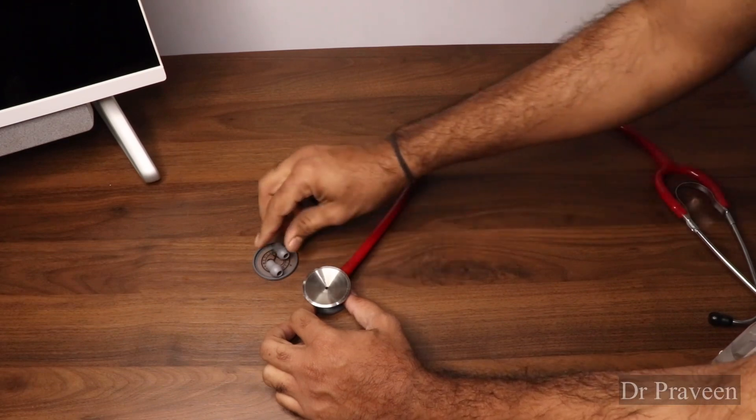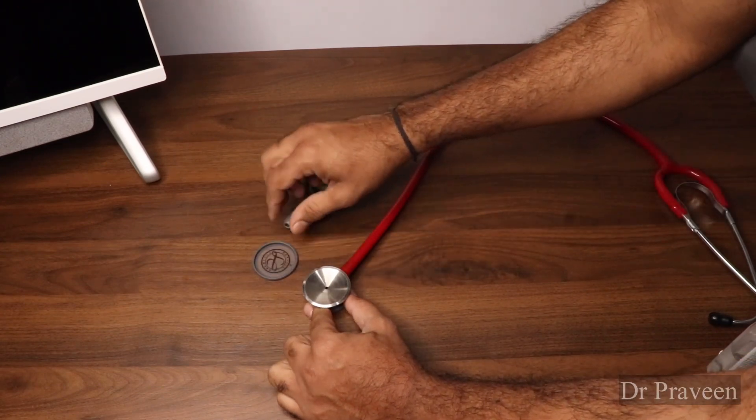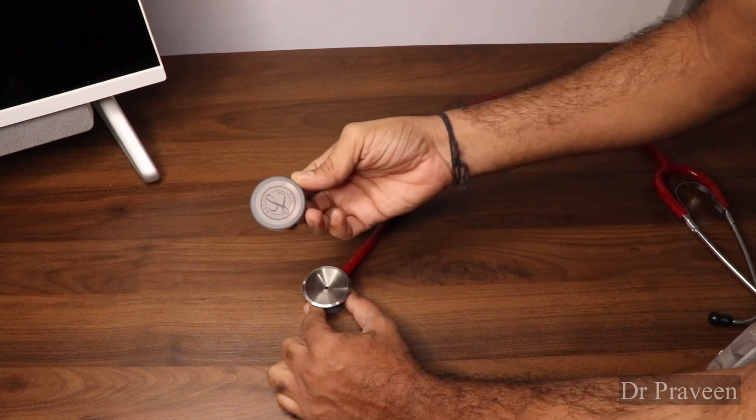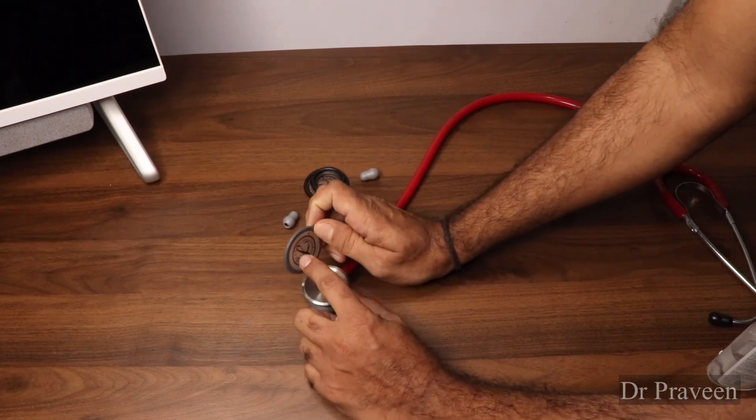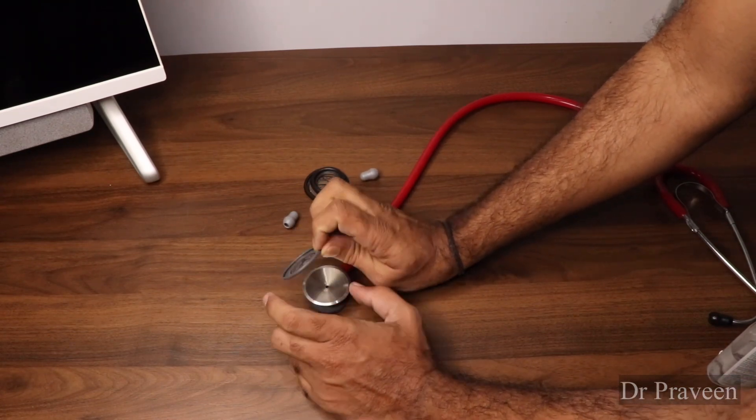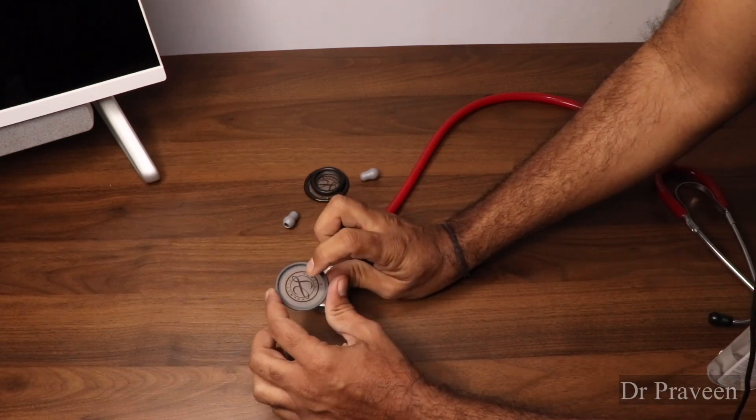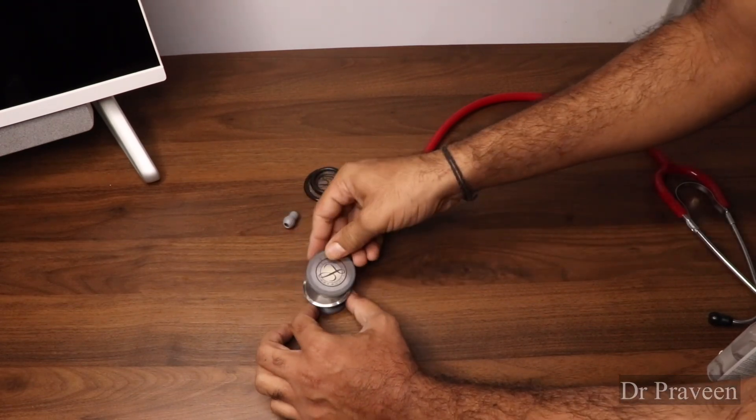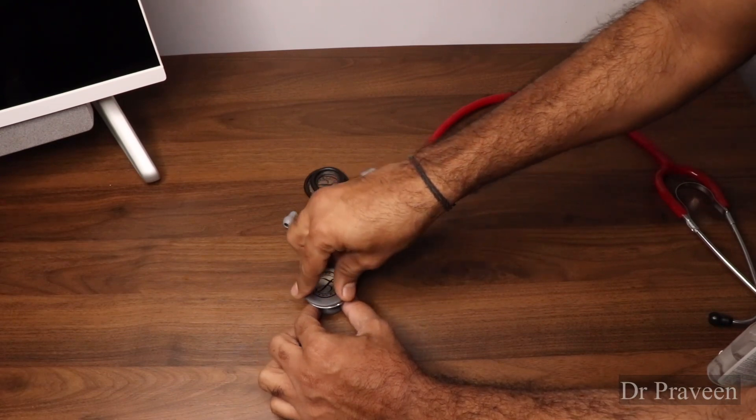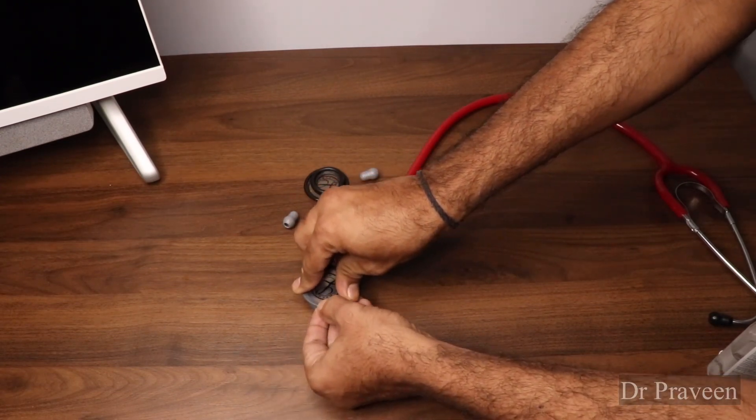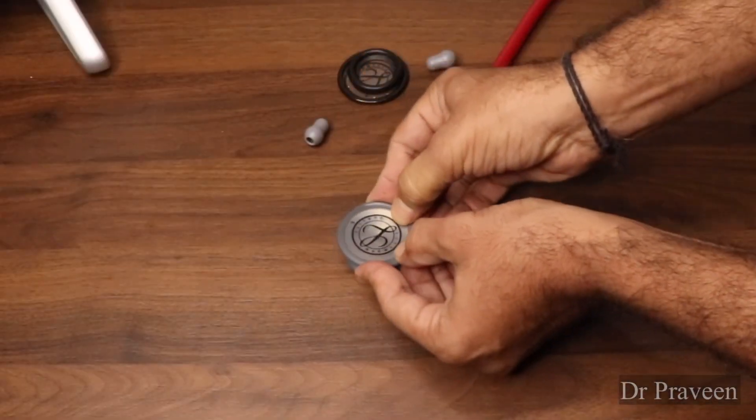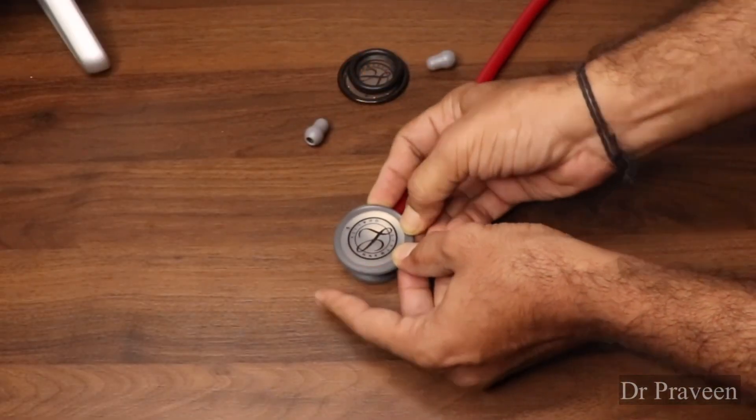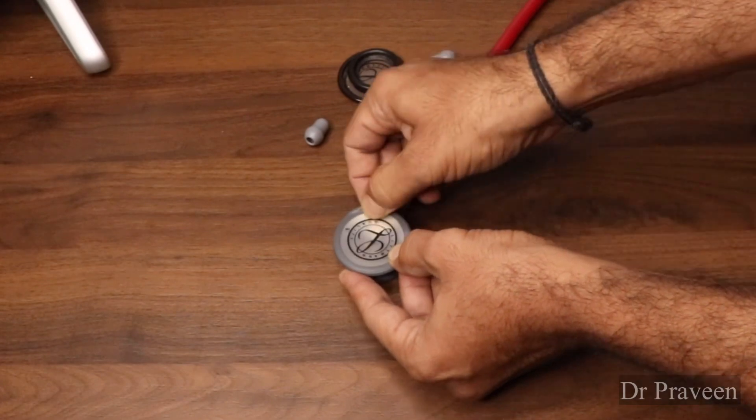Coming to this direction. Sometimes this outer ring and chest piece comes differently, so you need to just adjust it. In this piece it has come together, so you have to fix it.